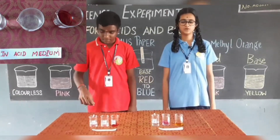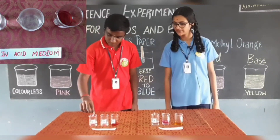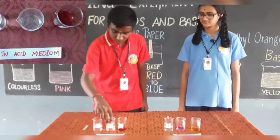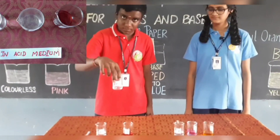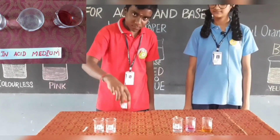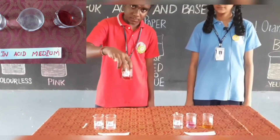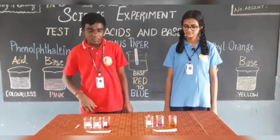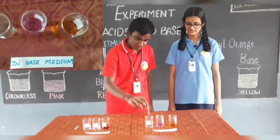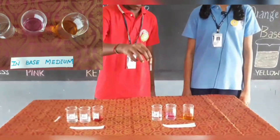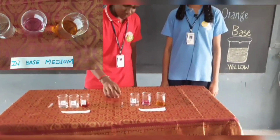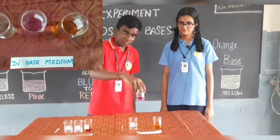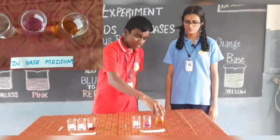In acid medium, blue litmus changes to red color, phenolphthalein is colorless, and methyl orange is pink in color. In basic medium, red litmus changes to blue color, phenolphthalein is pink in color, and methyl orange is yellow in color.